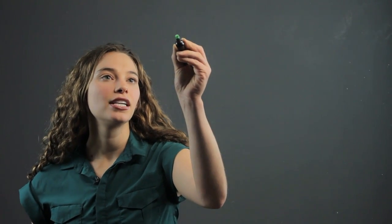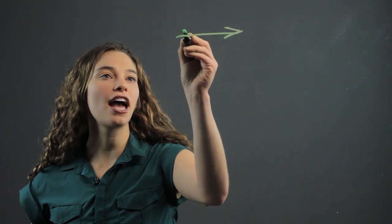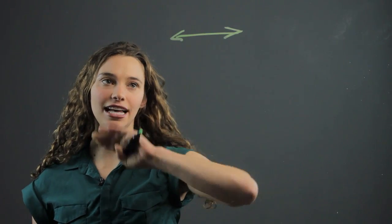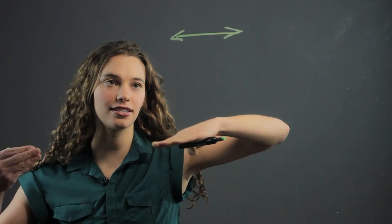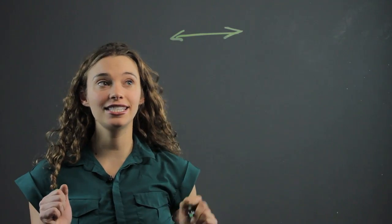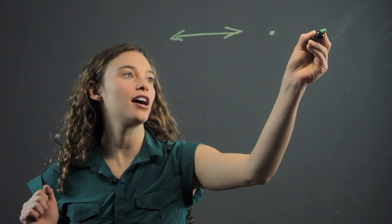So a line is something that goes on forever in both directions, that's straight, a straight line that goes on forever in both directions. Whereas a line segment does not, it ends.